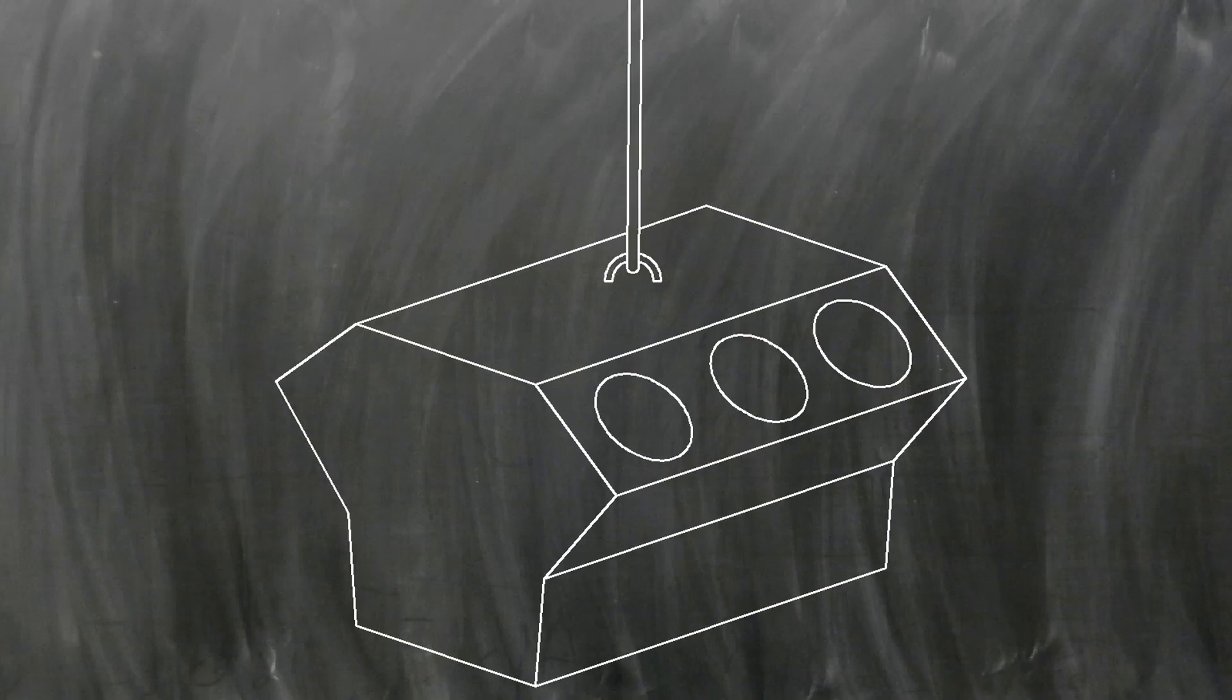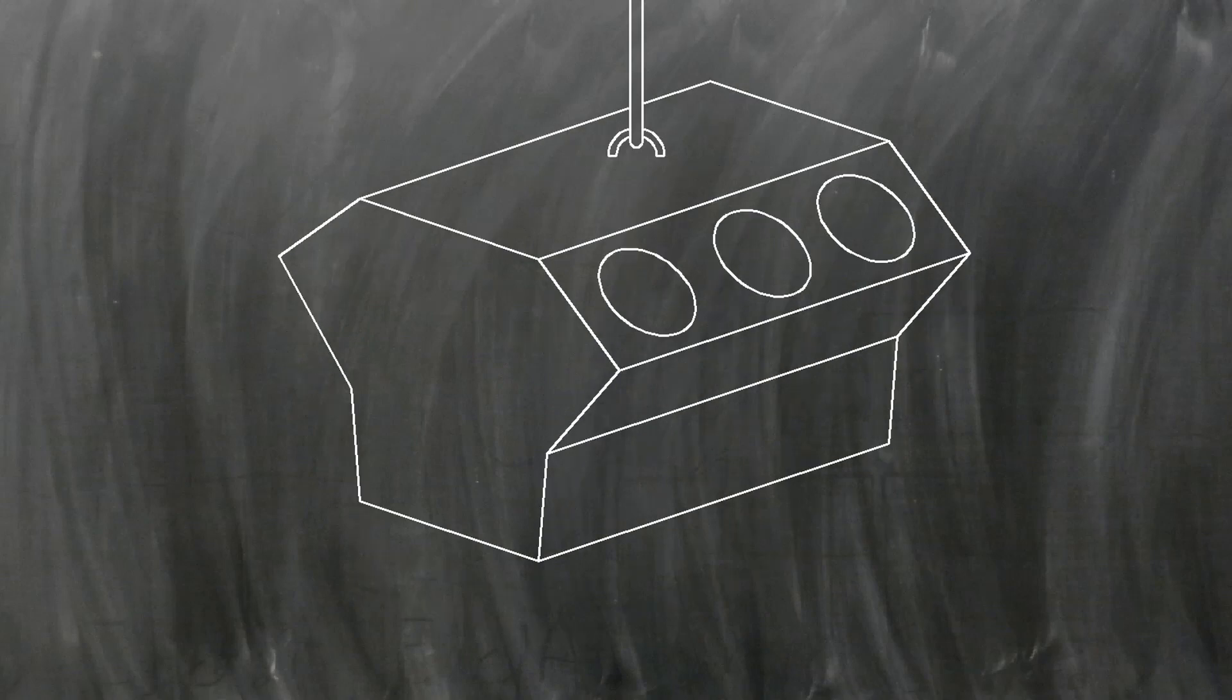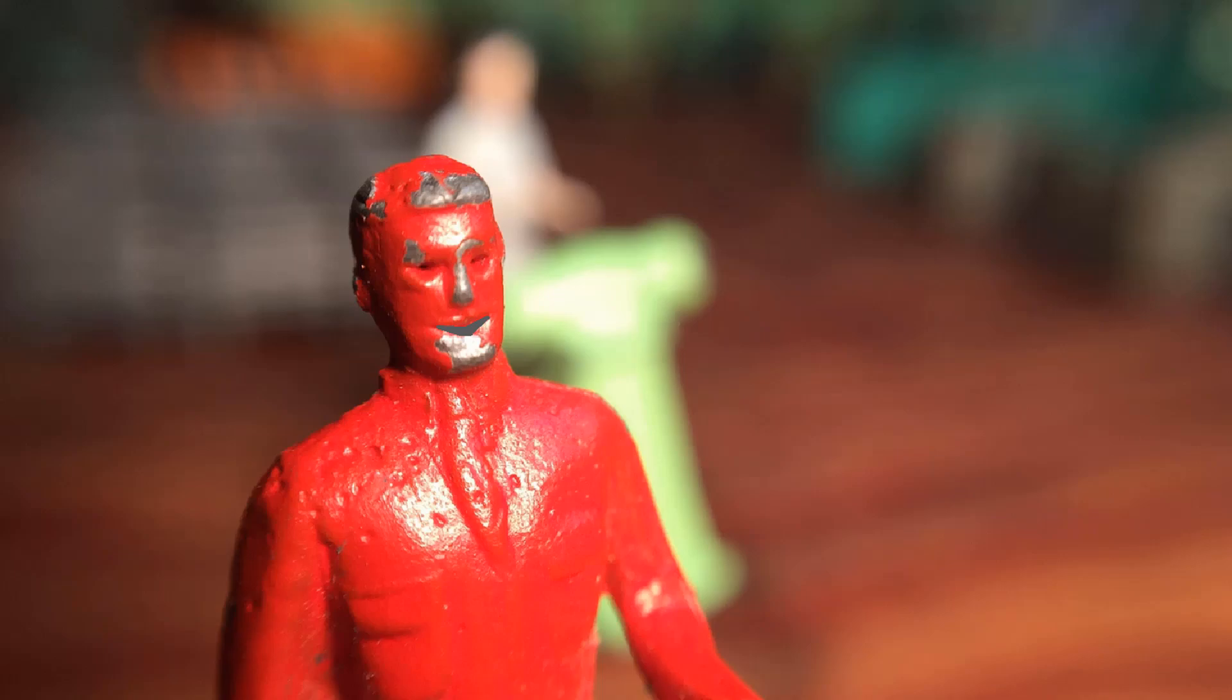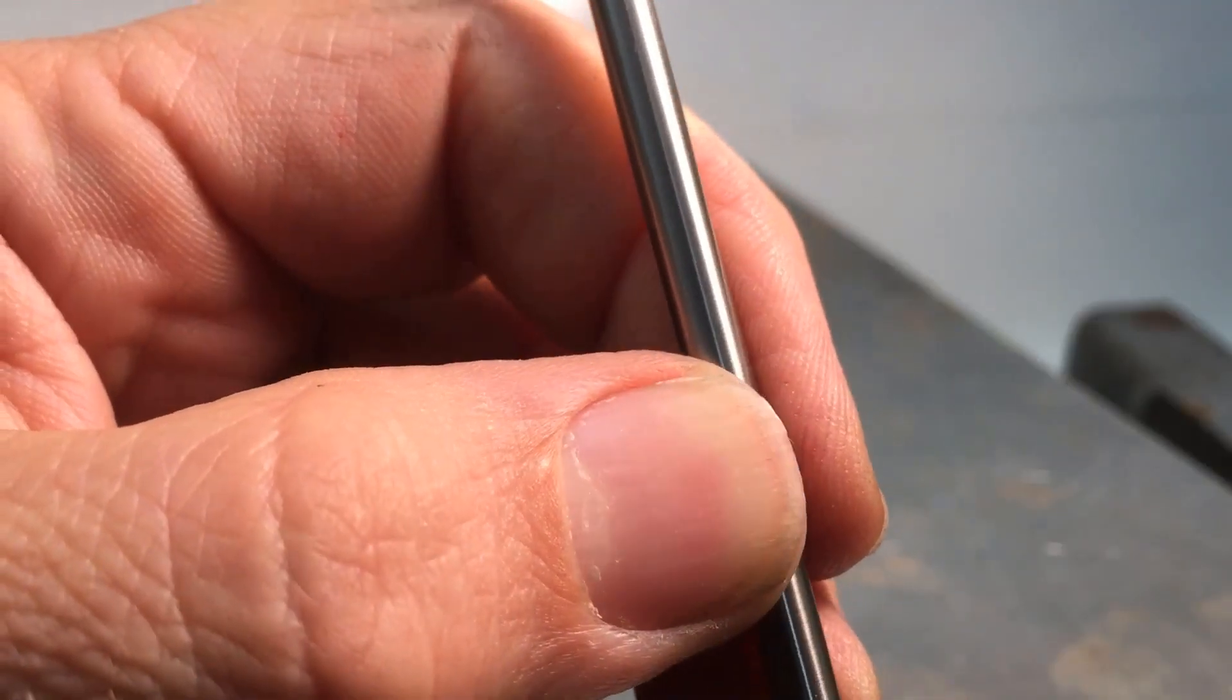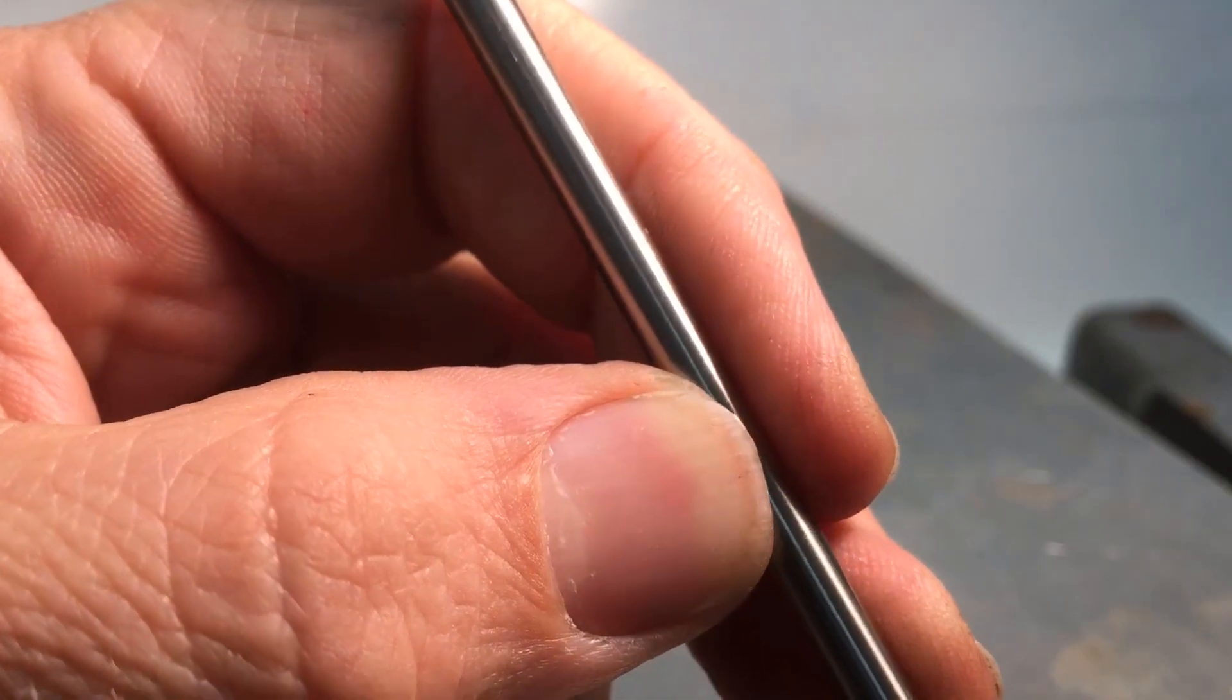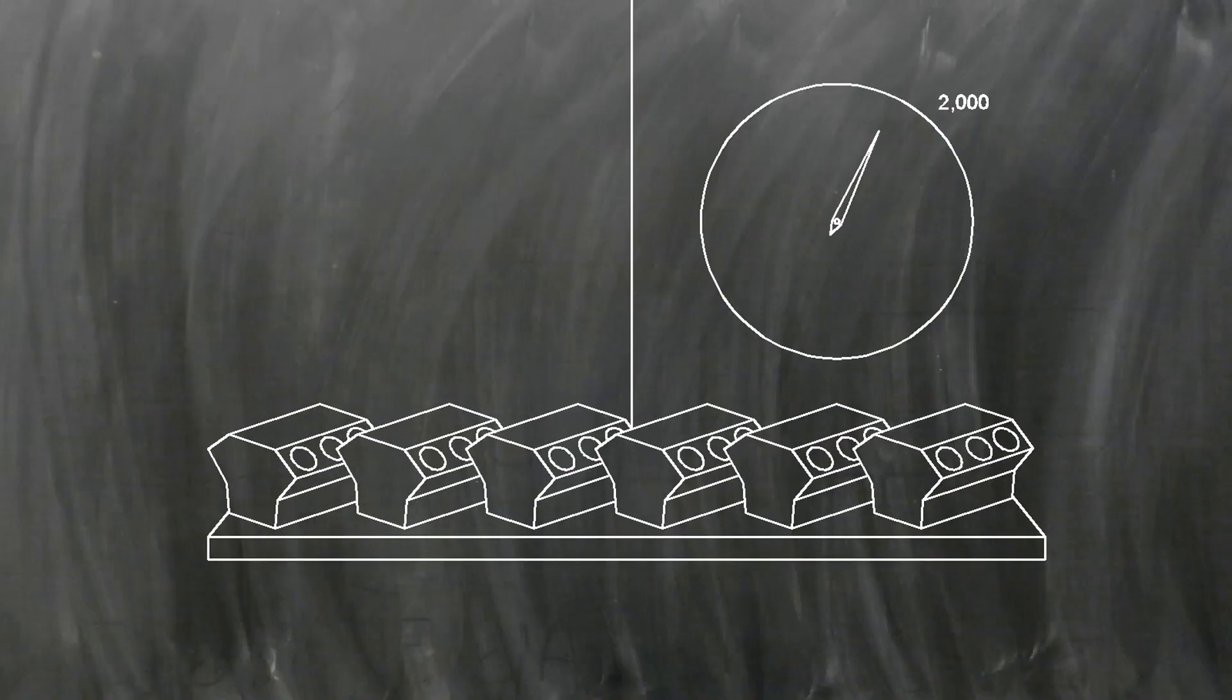You see, units of force like pounds are good if we're talking about doing a specific job, like picking up an engine block. But what if we wanted to talk about how strong the material was in general? Think about this. If we knew that the metal bar was this big, 3/16ths of an inch in diameter, and that it could hold 2,000 pounds, that tells us a lot more about the material.